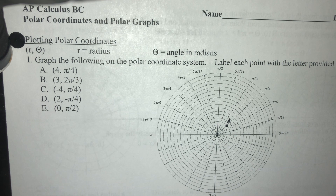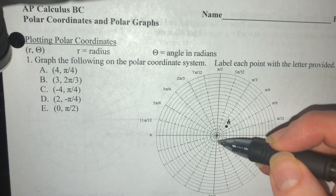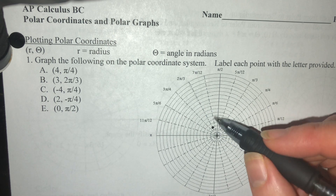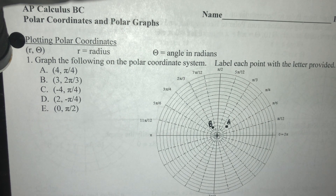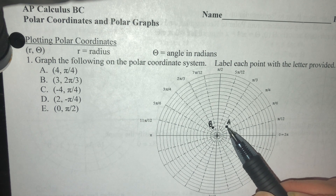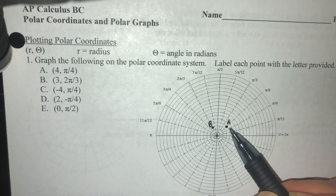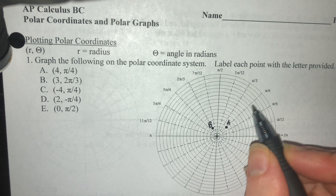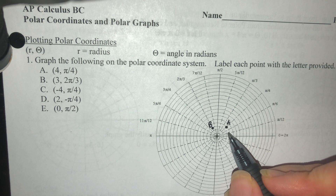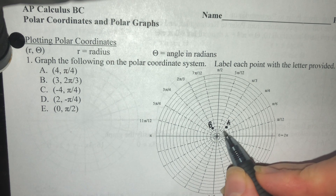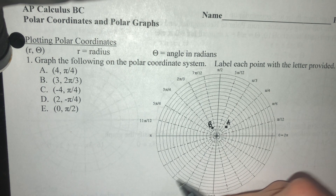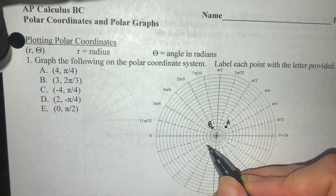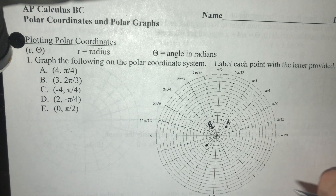Point B is at (3, 2pi/3). We go to the angle 2 pi over 3 and count out 1, 2, 3 units from the center. Point C is at (-4, pi/4). The angle is the same as A — pi over 4 — but with a negative radius we go the opposite direction, rotating 180 degrees into the third quadrant, counting out 1, 2, 3, 4 units. That is point C.